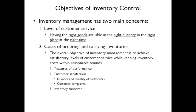The objective of inventory control has two parts. First is customer service — you want to have the right goods in the right quantity, in the right place, at the right time. The second is the cost of ordering and carrying inventories. You want to maintain inventory for customer service but keep inventory costs within reasonable bounds. Performance measures include customer satisfaction, counting back orders, customer complaints, and inventory turnover.